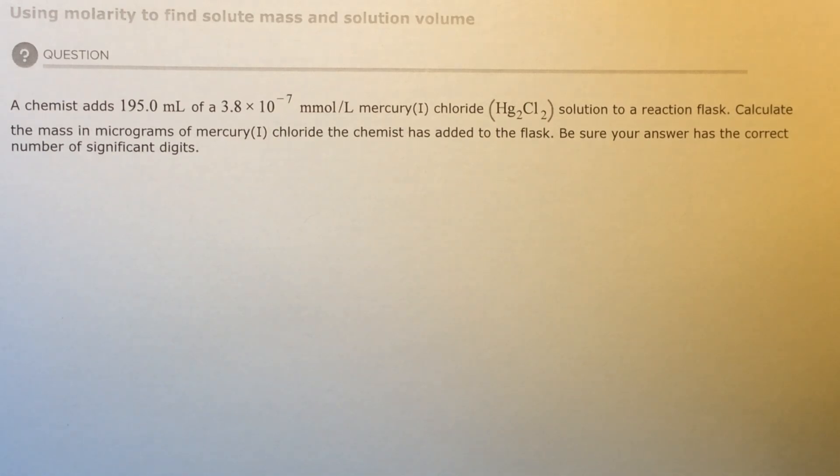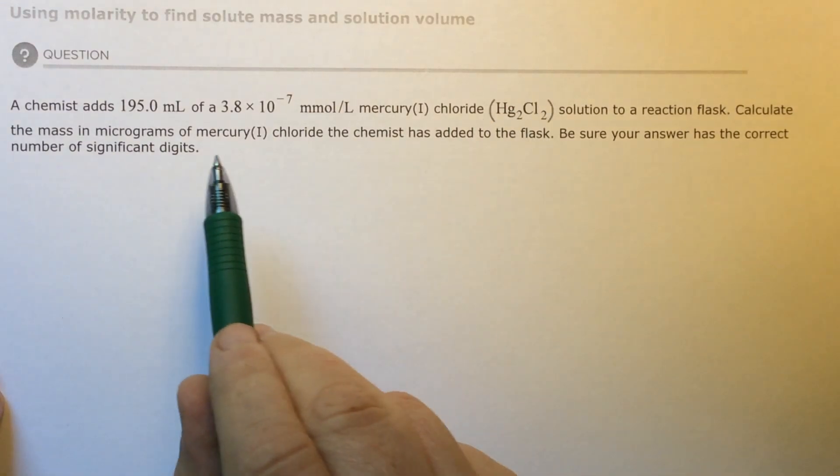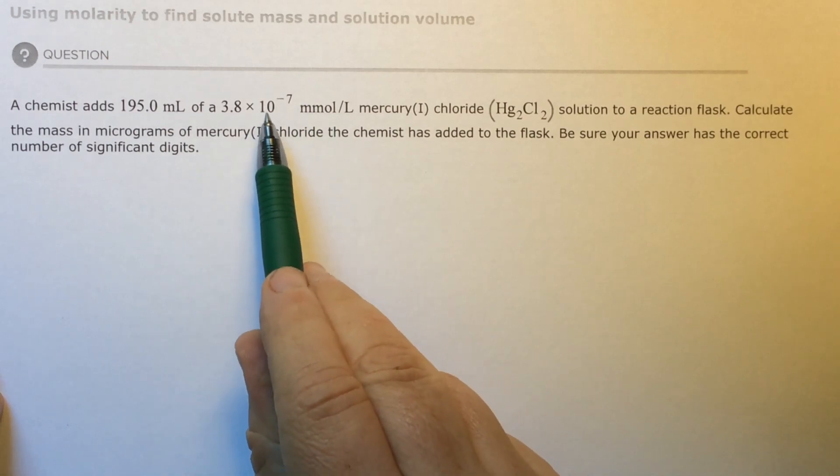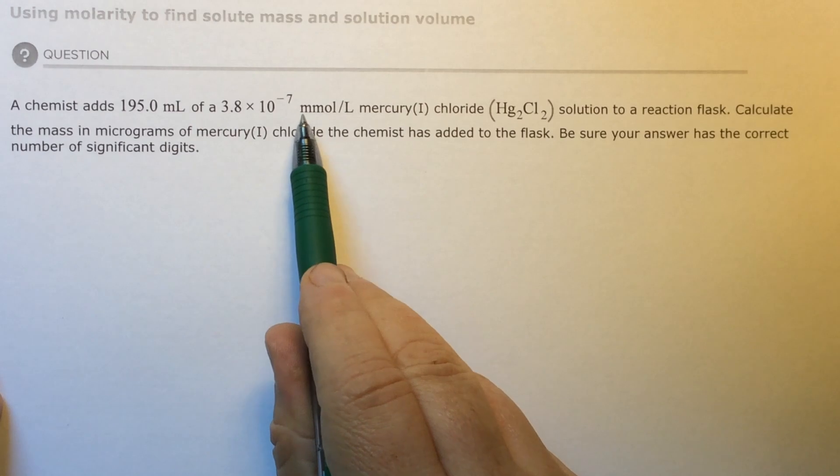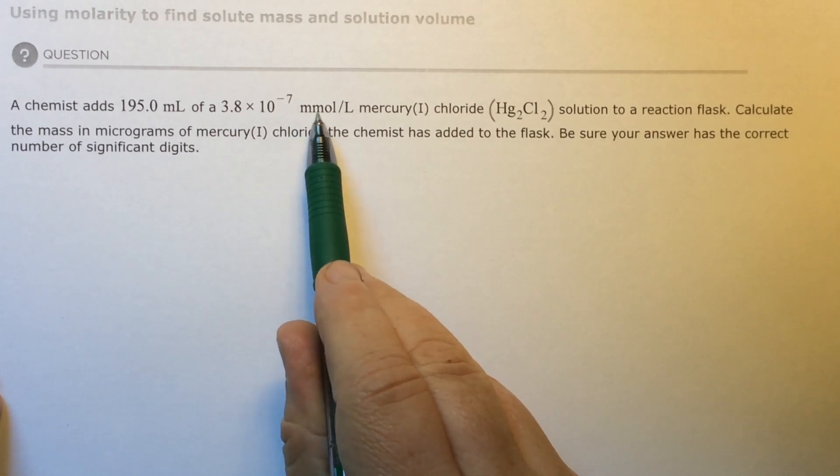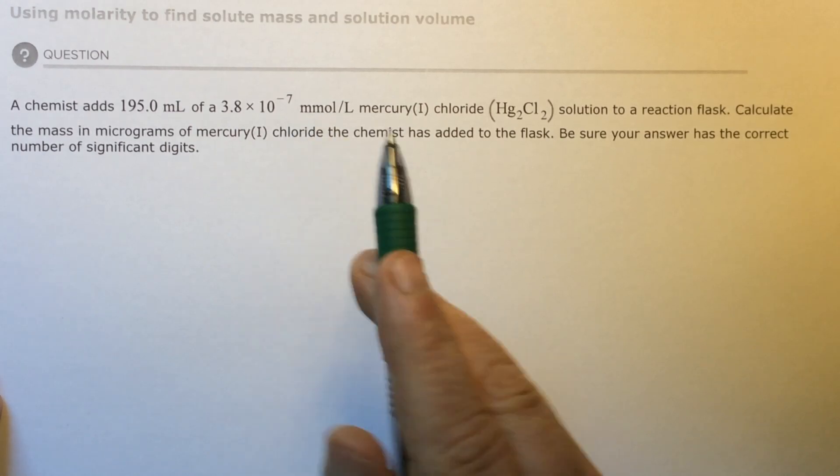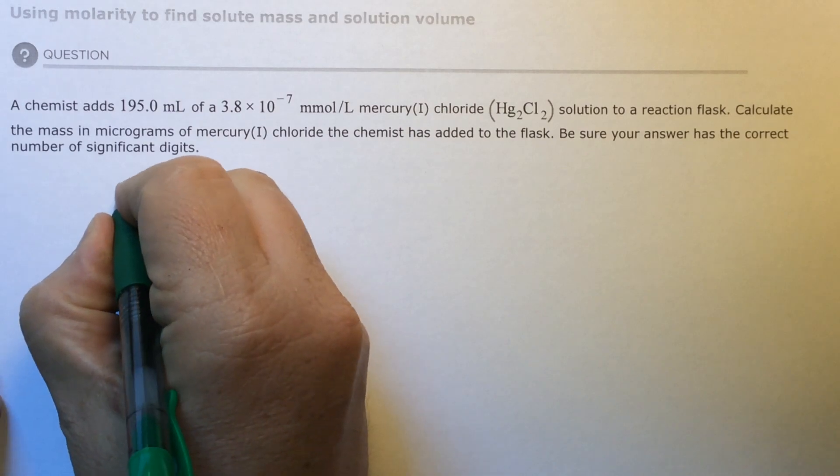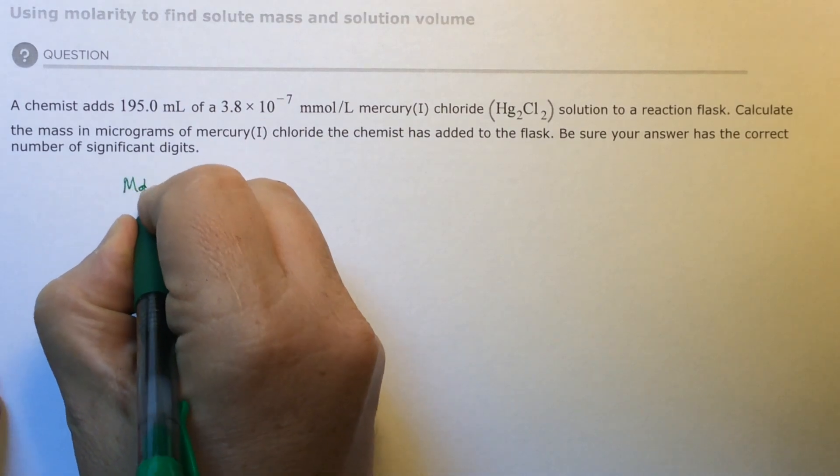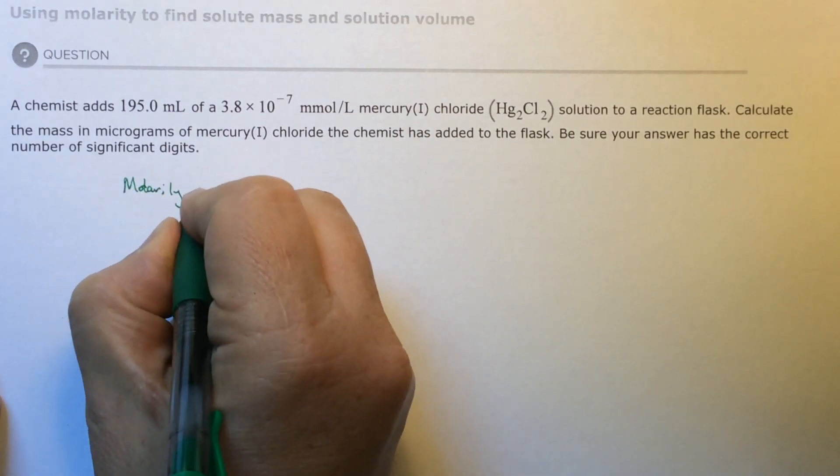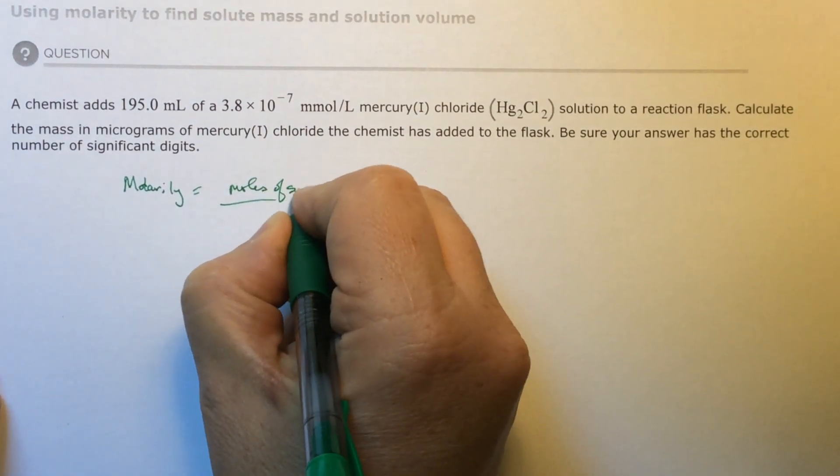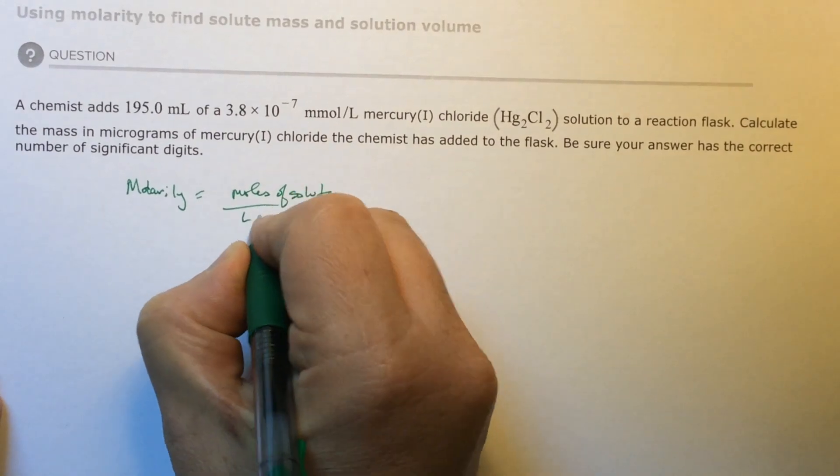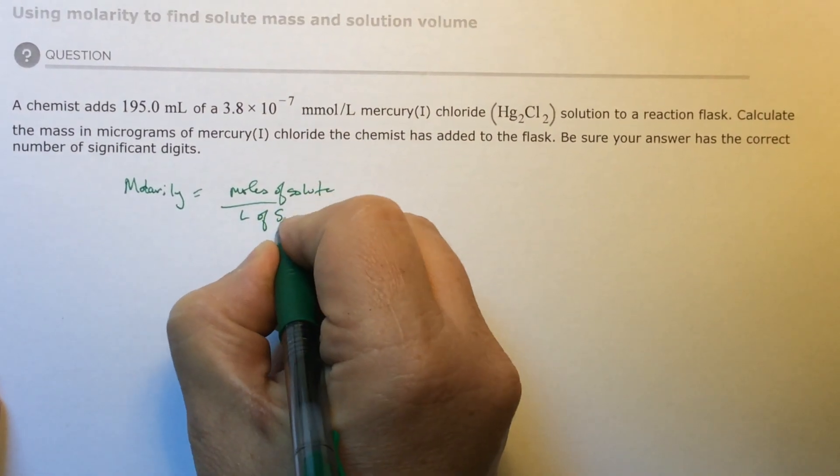If you remember, we're looking for a molarity. They're giving us a micromolarity here. Micromolarity is one thousandths of a molarity, so it's a very weak concentration. We'll say molarity equals moles of solute over liters of solution.